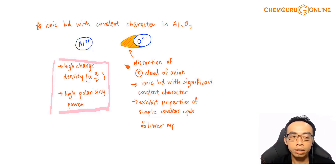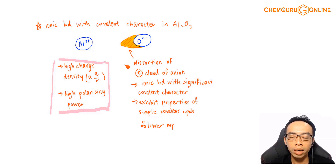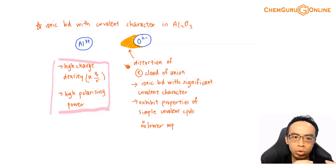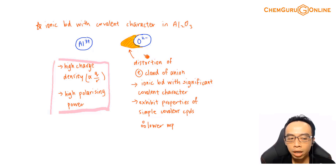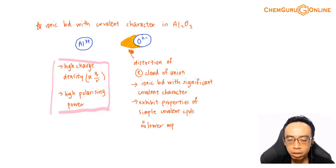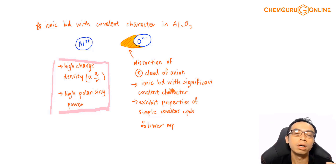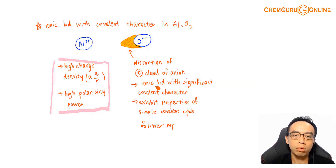Al³⁺ is highly polarizing — no matter where it goes, it has the innate ability to disturb surrounding species. In the context of oxides, Al³⁺ can pull the electron cloud of O²⁻, and the highlighted or shaded region represents the distortion of the electron cloud. If there is a distortion of the electron cloud, we say it has significant covalent character. The bigger the distortion, the more significant the covalent character.